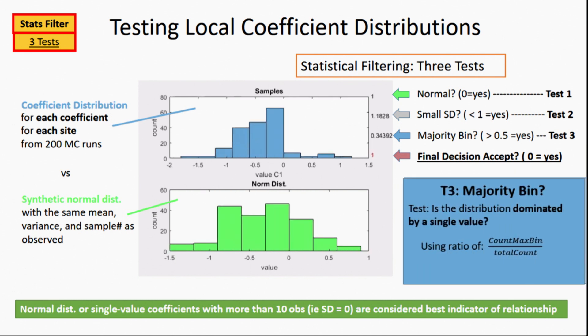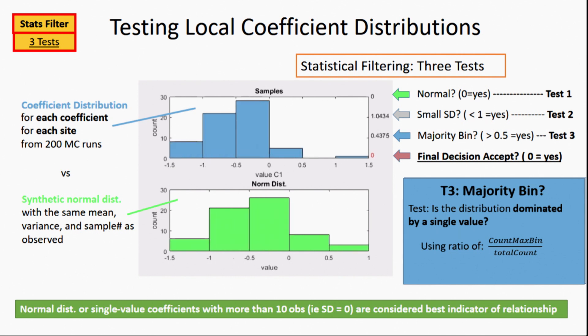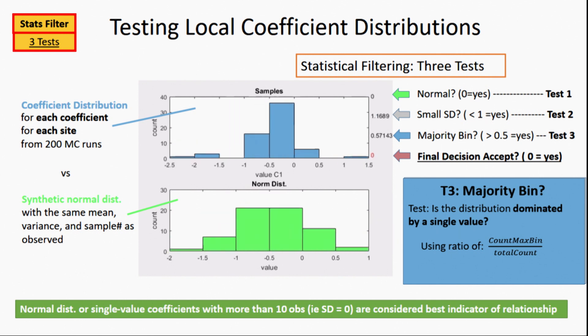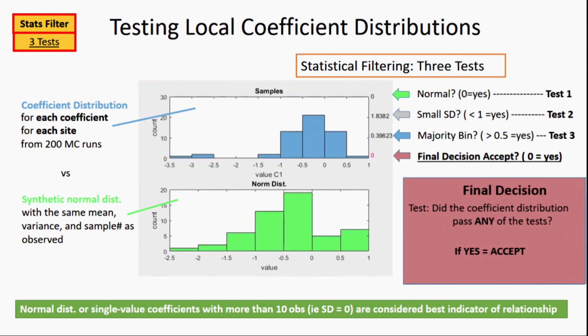And then our third test here is if we had a majority bin, if most of the coefficients fell in one bar here, then we feel like we could trust that it was pretty constant. It might be like that well-determined case. And then finally, if the distributions passed any of these tests, then we're going to call that data pretty trustworthy.